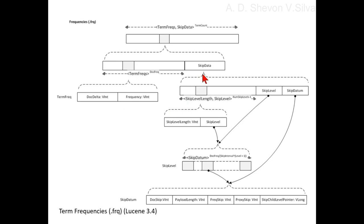Skip data contains a set of skip lists that allow us to find the term frequency doc delta quickly. The number of skip levels in skip data equals num skip levels, which equals the minimum of max skip levels and the floor of log(doc frequency) divided by log(skip interval). Doc frequency equals the doc count that contains the term. The number of nodes in each skip level equals doc freq divided by skip interval to the power of level plus 1.